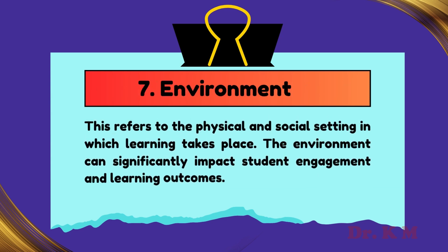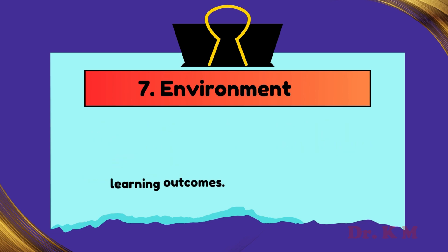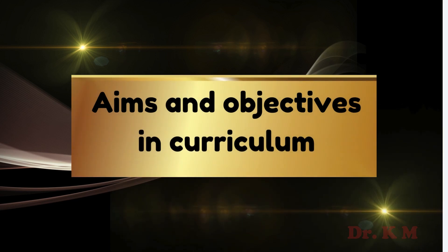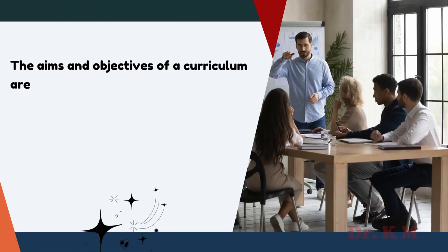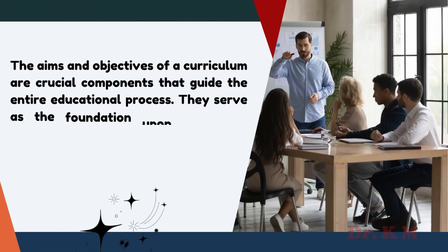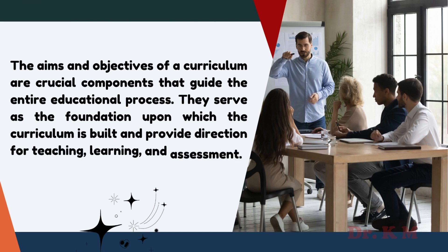7. Environment — this refers to the physical and social setting in which learning takes place. The environment can significantly impact student engagement and learning outcomes. Aims and objectives in the curriculum are crucial components that guide the entire educational process. They serve as the foundation upon which the curriculum is built and provide direction for teaching, learning, and assessment.